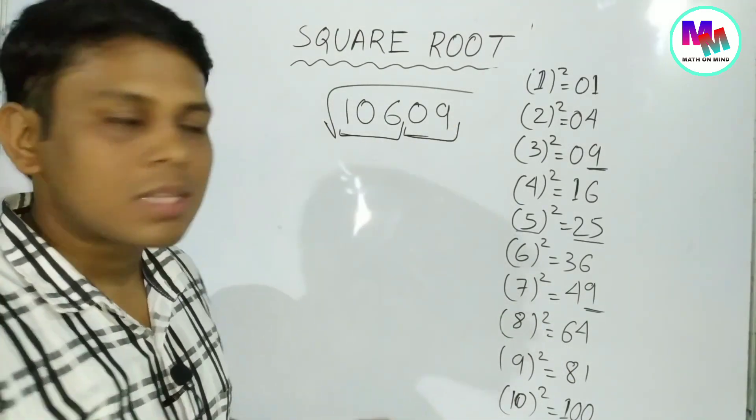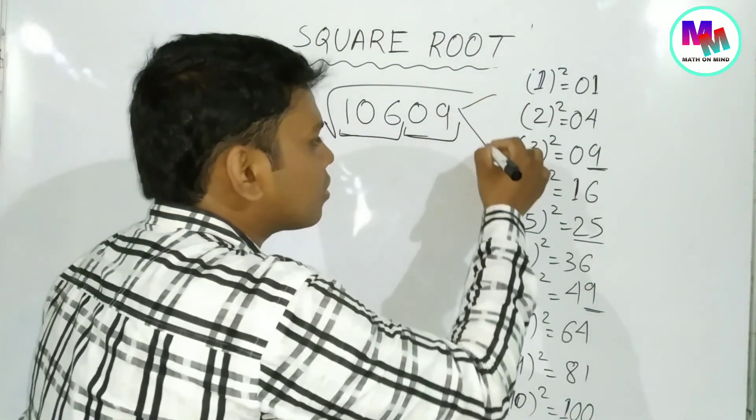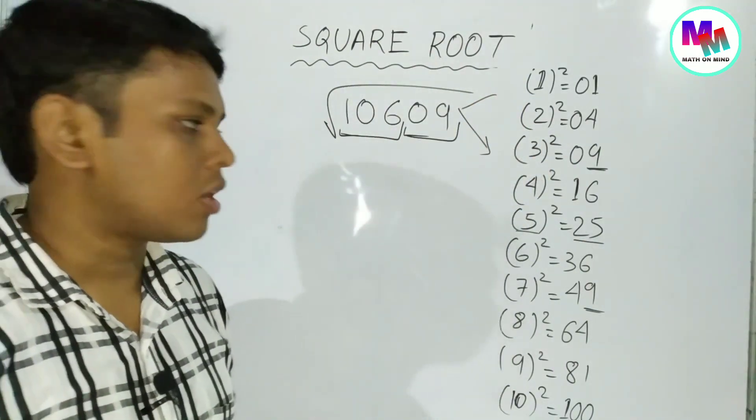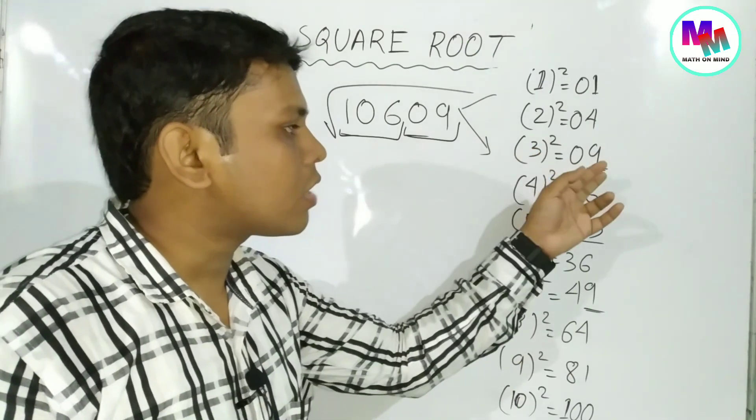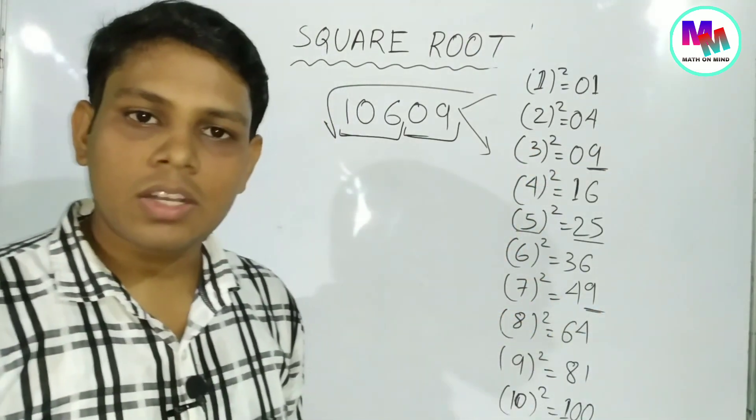We break it into pairs. I'll show you the square root method - we cover it step by step using the pairing technique.